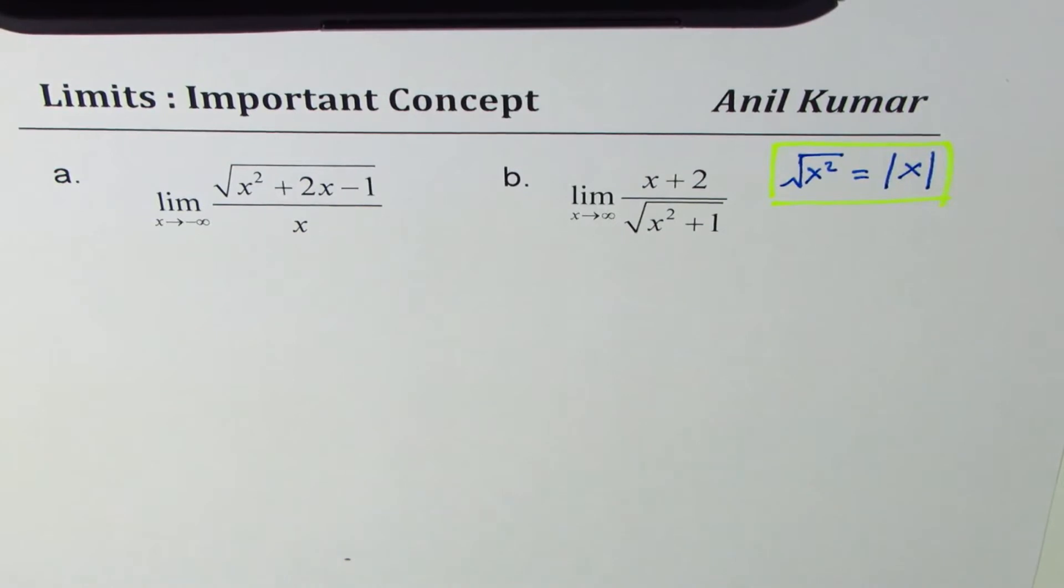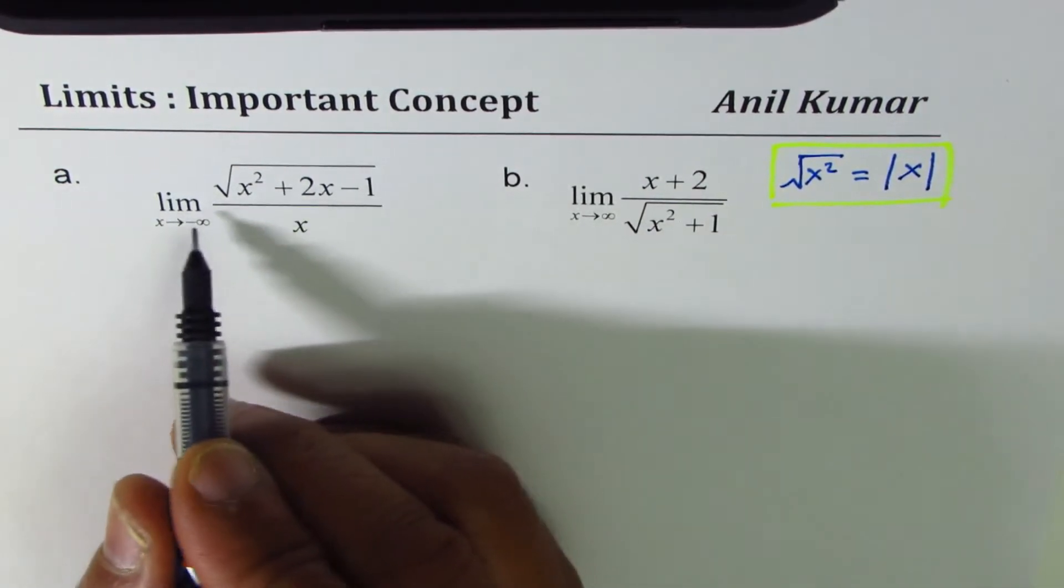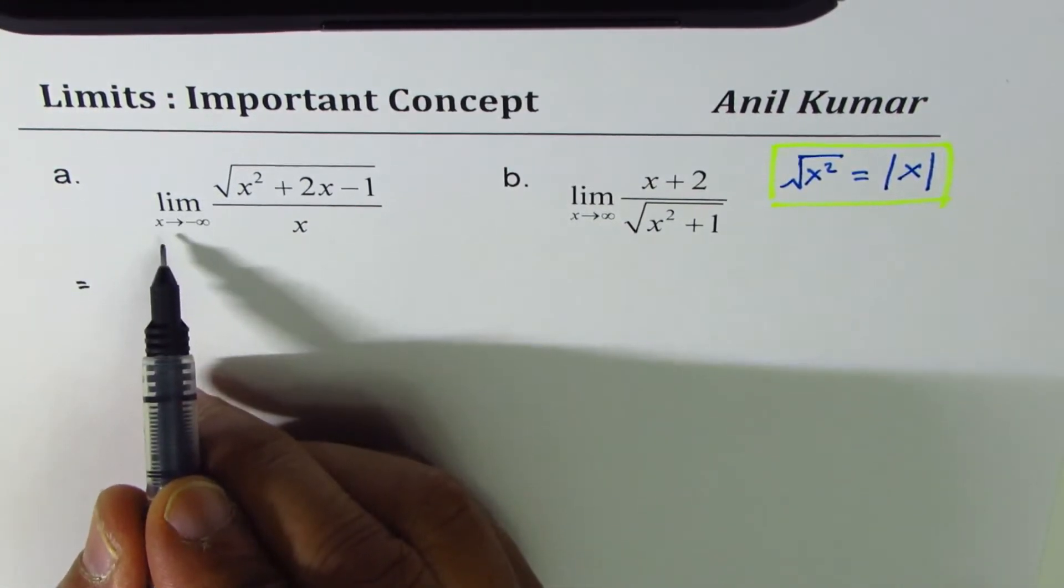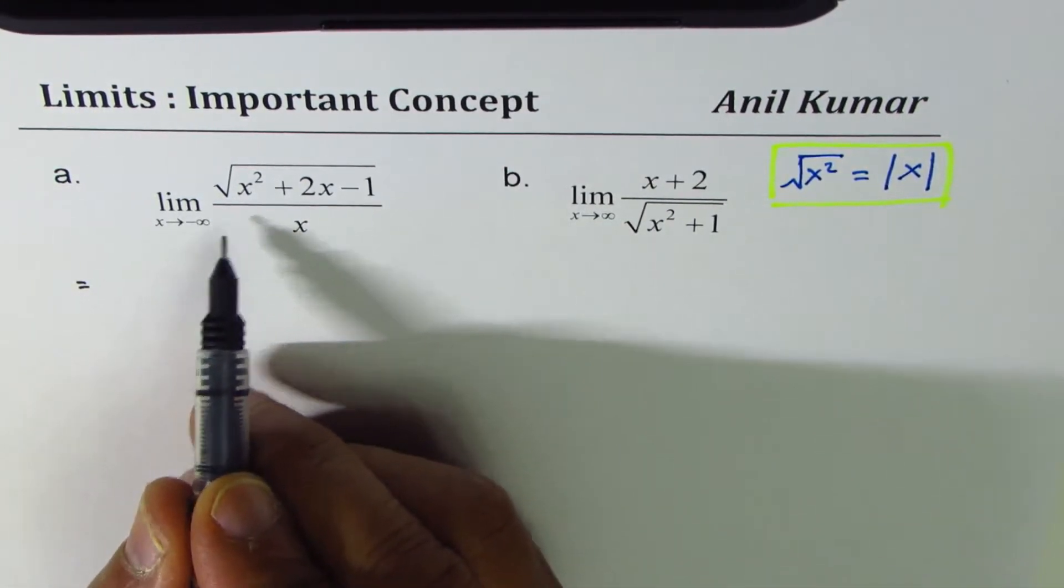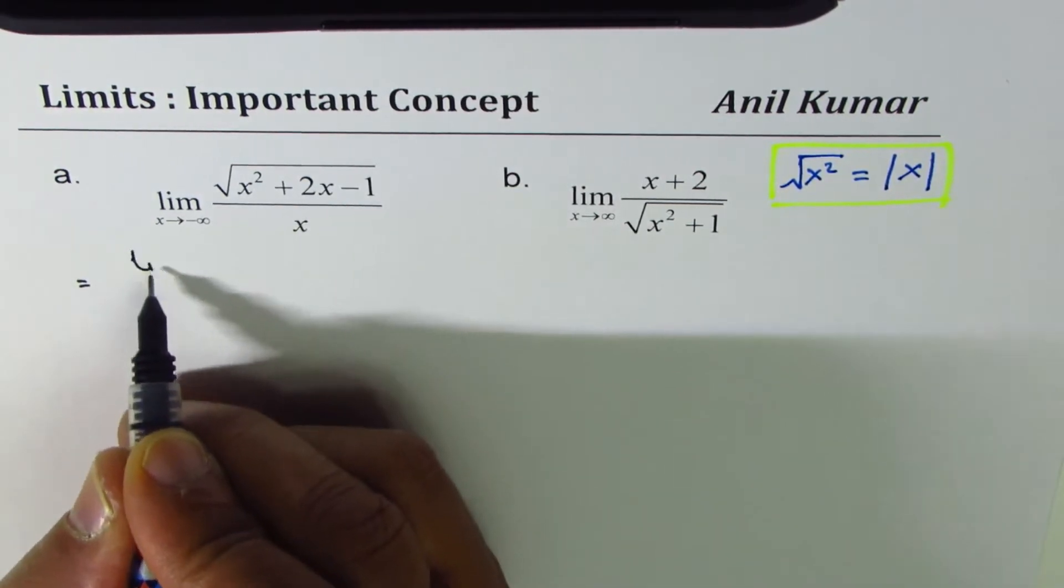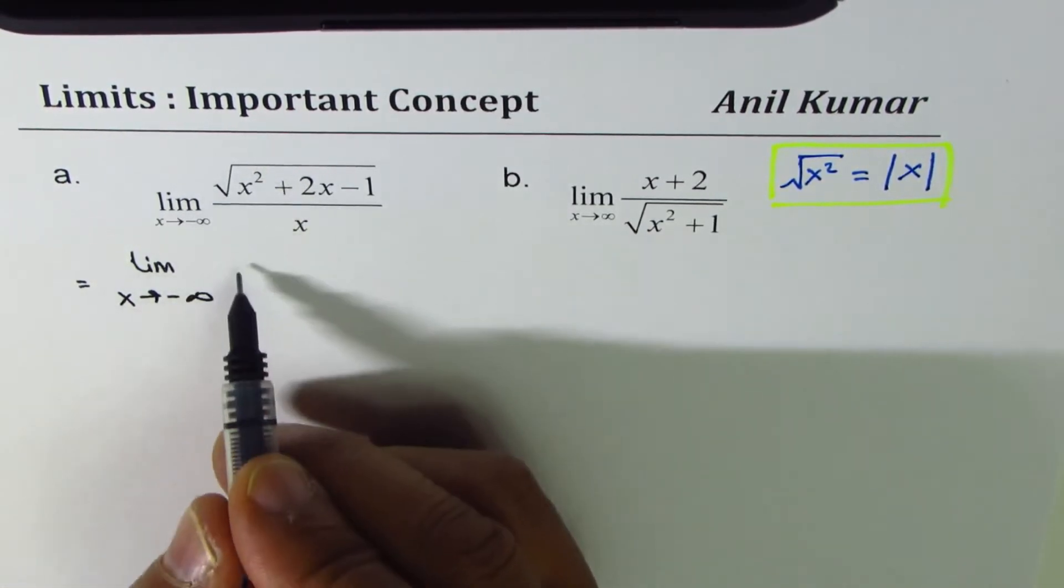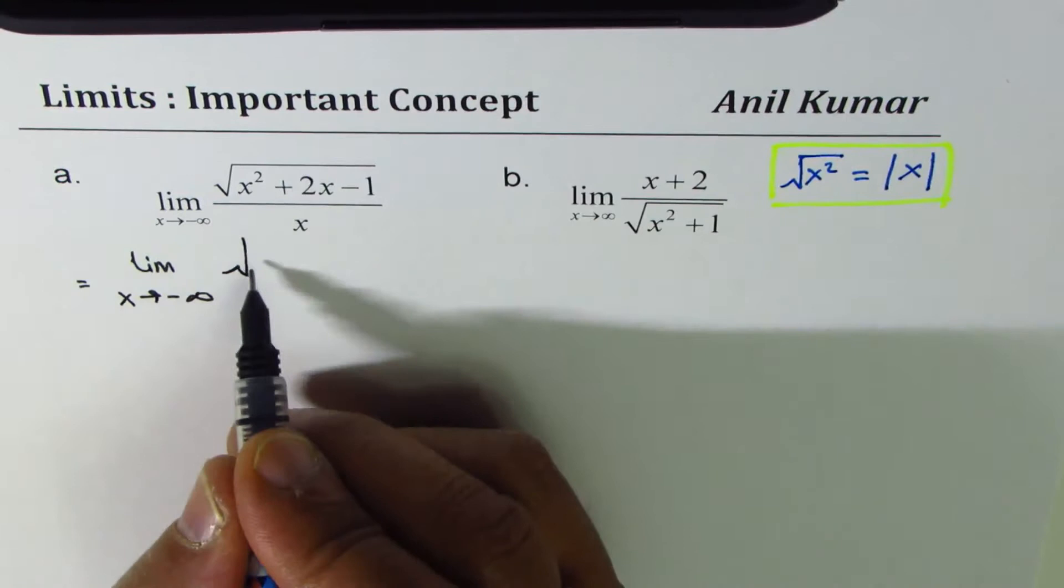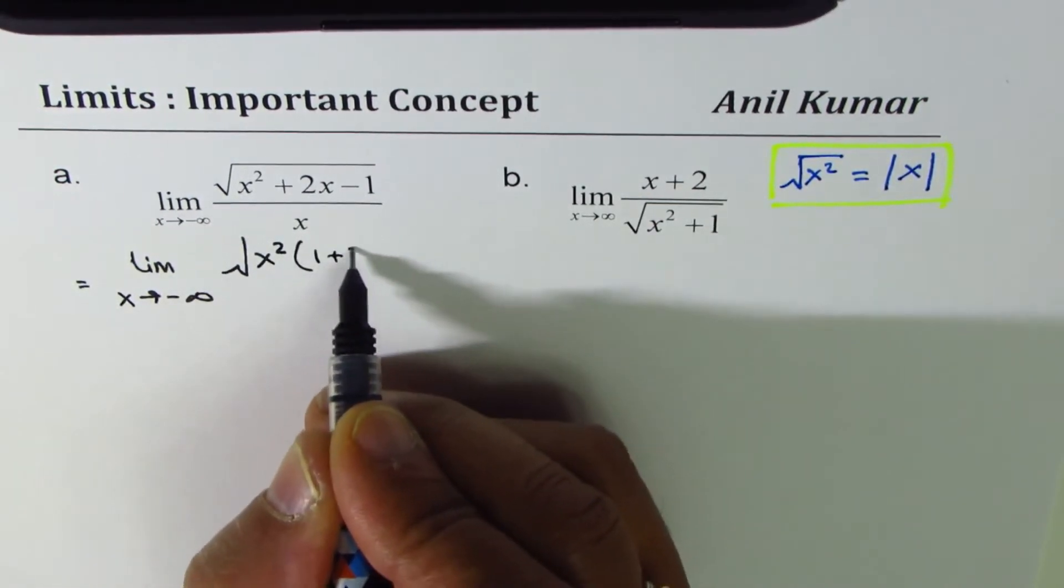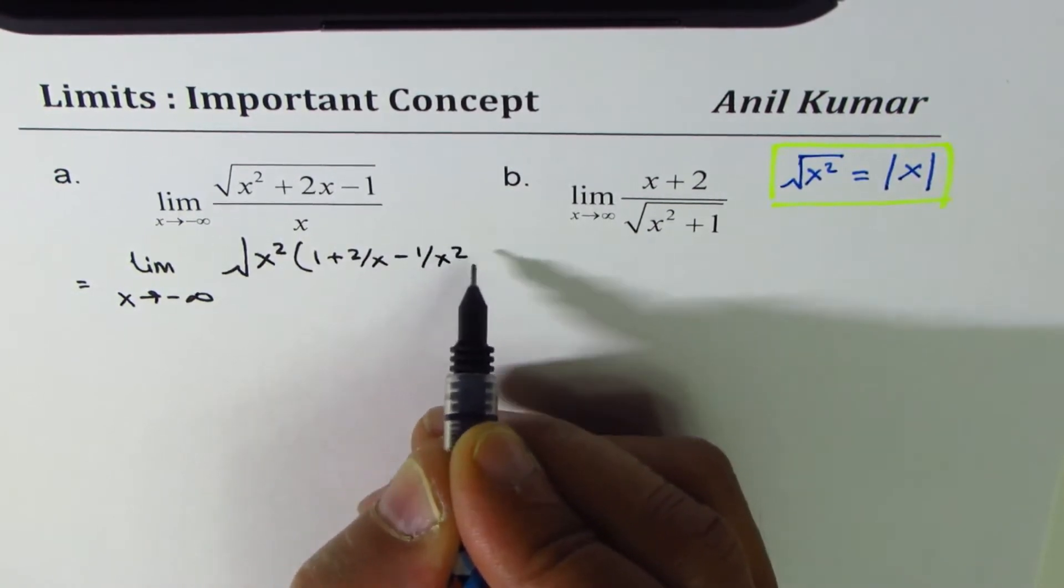Now let's continue. So in the very first case as we did with most of the questions where x approaches infinity we'll factor out x square. So we have the function limit x approaches minus infinity within square root. I'm going to factor x square. So we're left with 1 plus 2 over x minus 1 over x square.